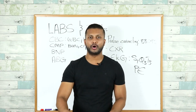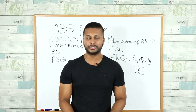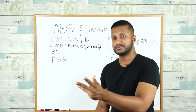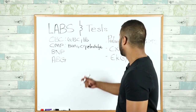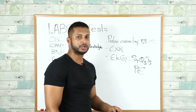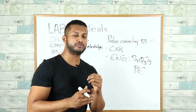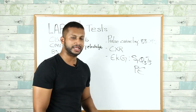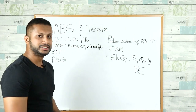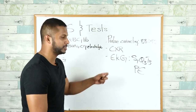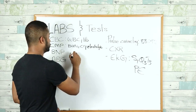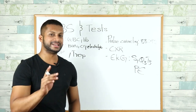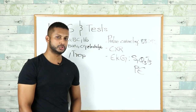These are the basic lab orders you are going to place as an intern: CBC, CMP, BNP, a venous or arterial blood gas, continuous pulse oximetry for moderate to severe COPD exacerbation, a chest X-ray, and an EKG. Always get a troponin as well, because this might as well be an MI — never ever miss an MI.